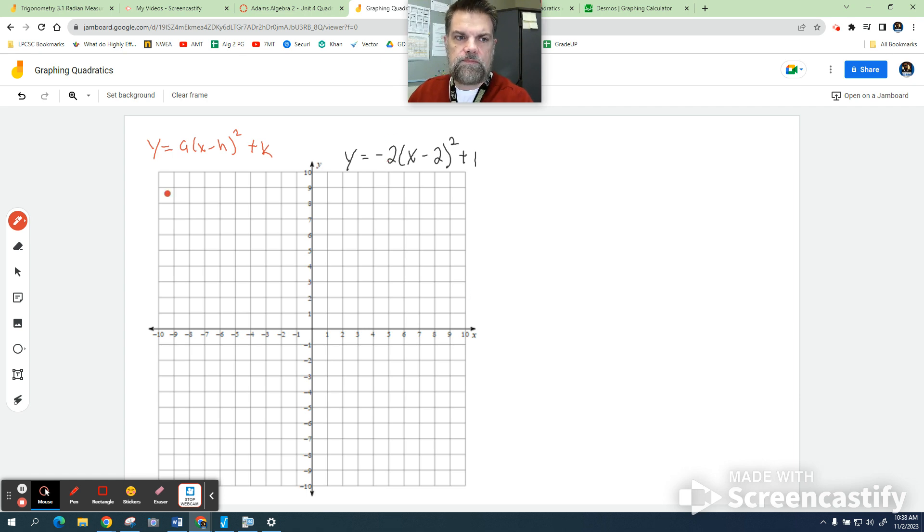And also remember that the vertex, our vertex is h comma k. So when I look at this, because the formula has a minus sign here, and I have a minus sign here, that lets me know that my h value is positive 2, and then the k value, whatever k is, k is. So that is a positive 1.